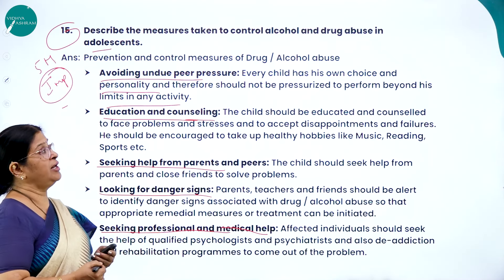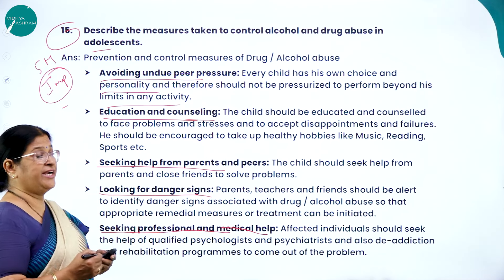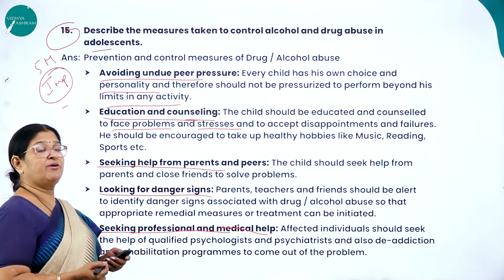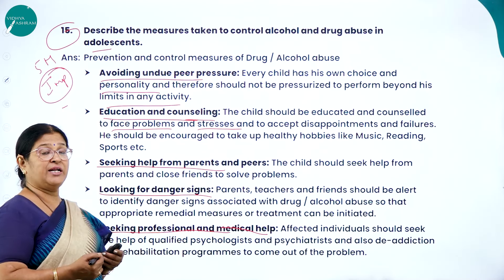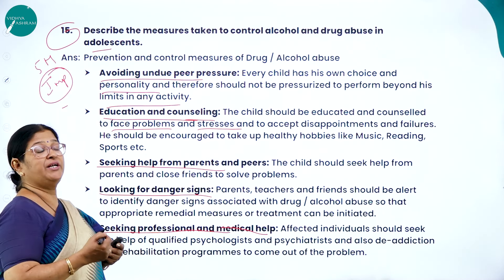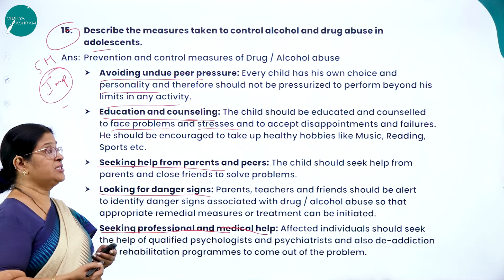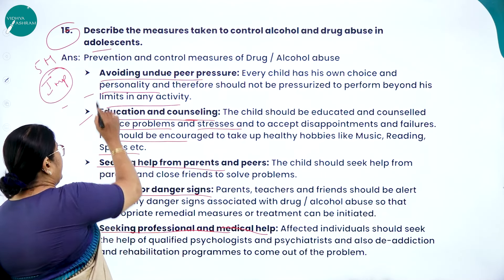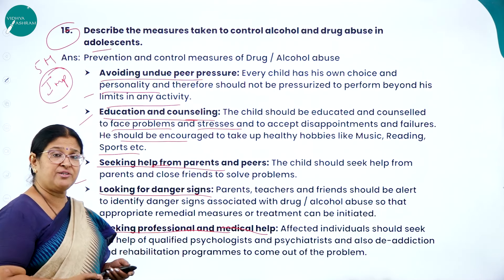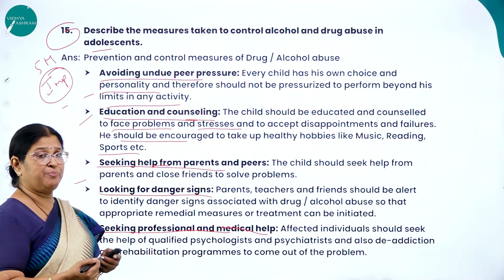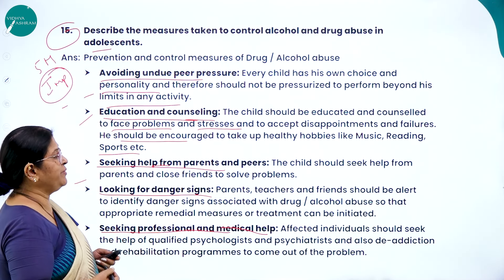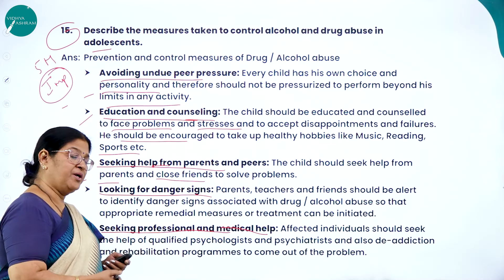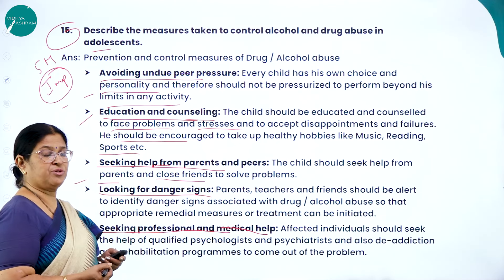Education and counseling is very important — proper education and counseling is a must for adolescents so they stay on the right track. The child should be educated and counseled to face problems and stresses, and to accept disappointments and failure in a positive manner. He should be encouraged to take up healthy hobbies like music, reading, and sports. Seeking help from parents and peers: parents are the best friends for a child, and the child should discuss problems with parents or close friends to come out of difficulties.